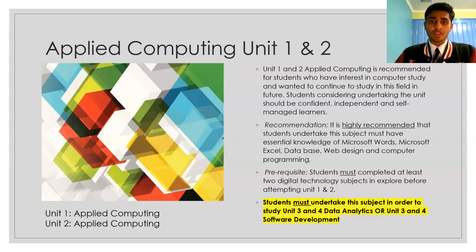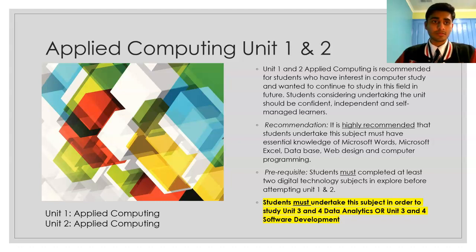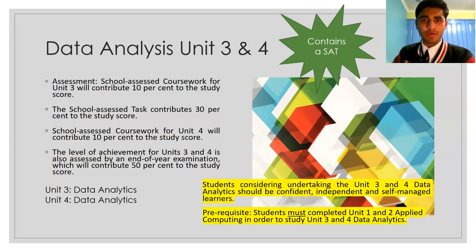In Area of Study 1, students work collaboratively and select a topic to create an innovative solution in an area of interest. The solution can be presented as a proof of concept, a prototype, or a product, and students engage in all areas of the problem-solving methodology. In Area of Study 2, as an introduction to cyber security, students investigate networks and threats, vulnerabilities and risks to data and information, and propose strategies to protect data accessed using a network. Note that unit 3 and 4 has a SAT involved, and you must have successfully completed Applied Computing 1 and 2 before commencing.